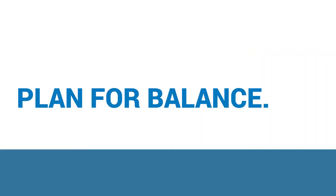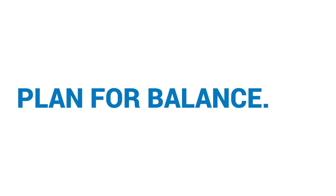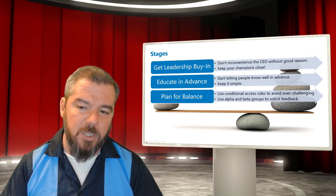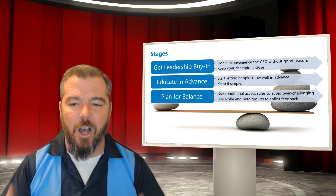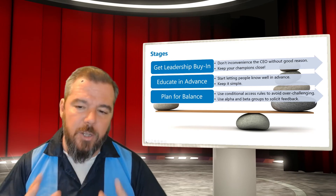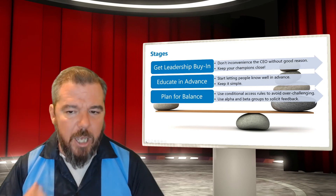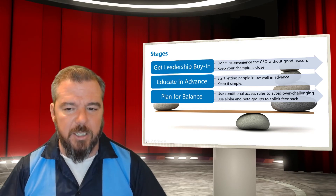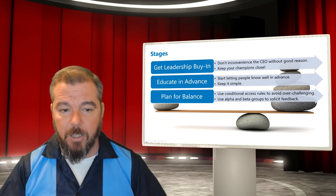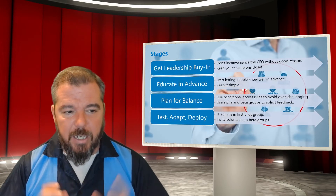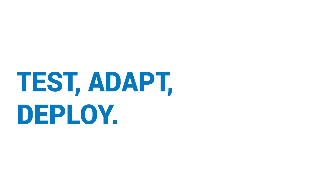Next: plan for balance. I've talked a lot about the balance between productivity and security. Use conditional access rules to make sure you're not over-challenging your users, and then use your alpha and beta groups to determine where that balance is between productivity and security. Next: test, adapt, test, adapt — as many times as you need to.